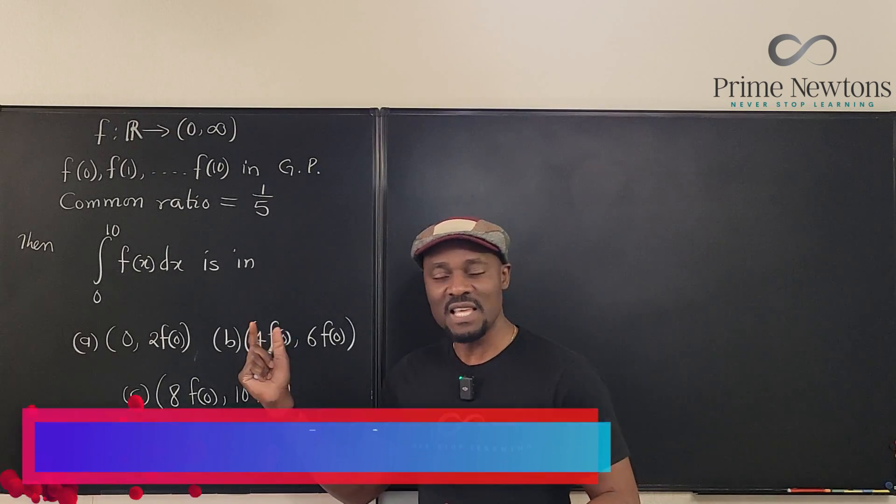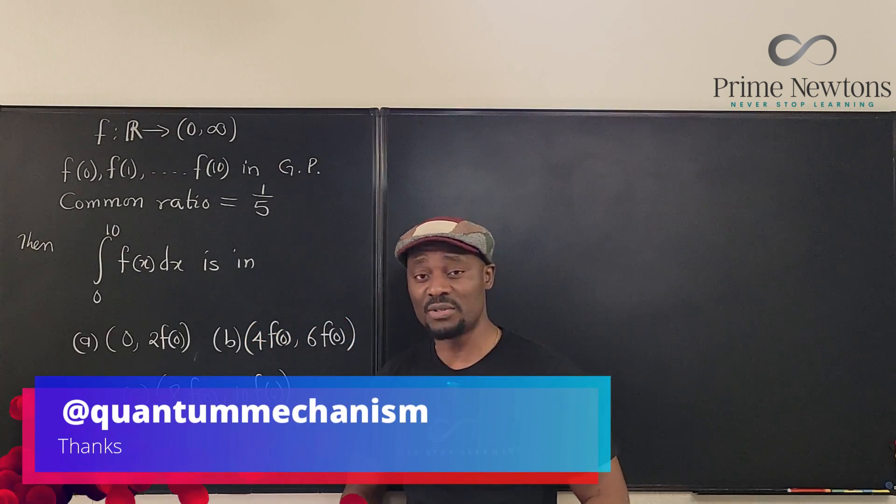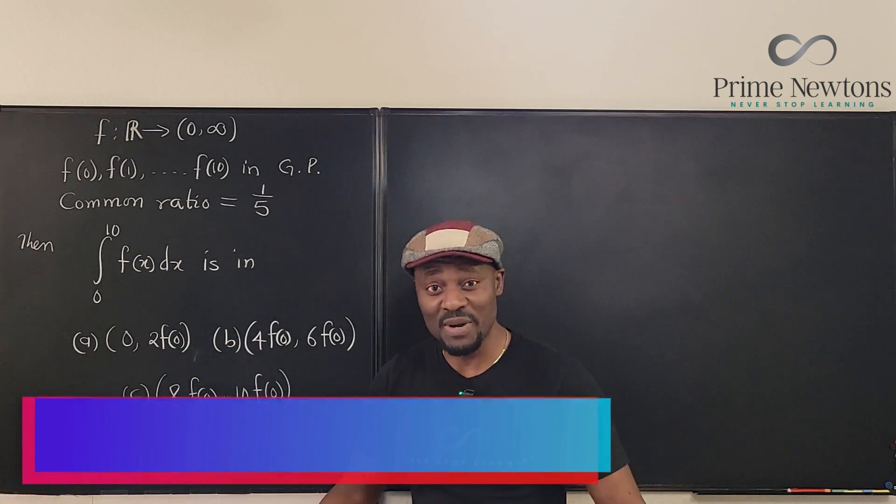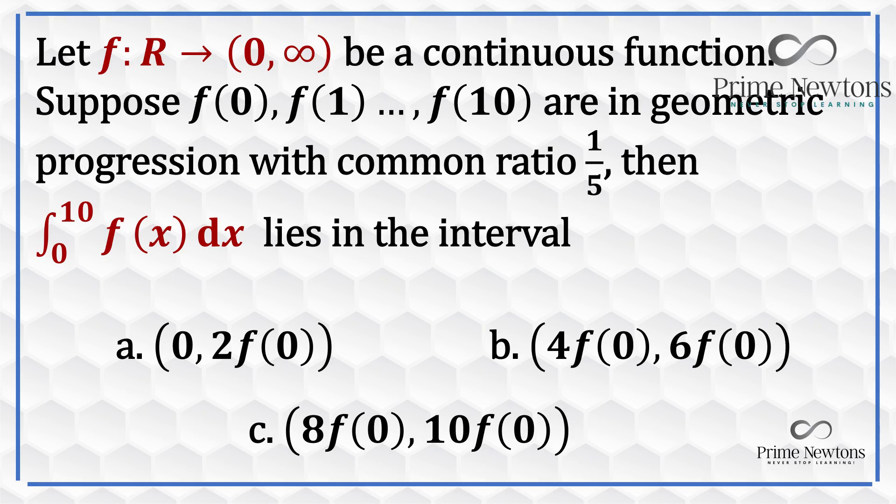I got this in an email from one of the subscribers and thought it was an interesting question. So we have a function that takes real values and maps them to real values, and all the output values are greater than zero. That's the meaning of this. So if you plug in zero, you're gonna get a real value f(0), and f(0) is greater than zero.